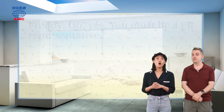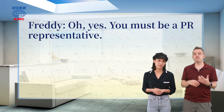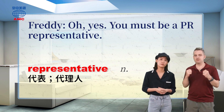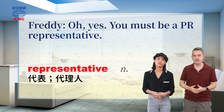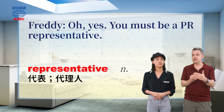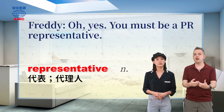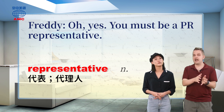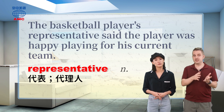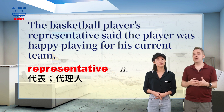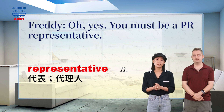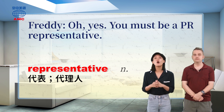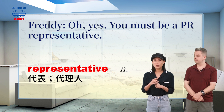Freddie, hearing this, says, 'Oh yes, you must be a PR representative.' A representative is a person who represents another — they kind of stand in for them. They are like: I'm this company's person, I'm working for this company, and I'm speaking for them. For example, Edward is working for a company, or maybe even a single famous person, and he's doing business for them. He represents this company or person and gets the right deal for them, so he is their representative. For example: the basketball player's representative said the player was happy playing for his current team.